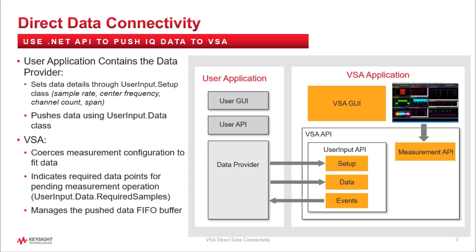There is feedback from VSA to the user application. This consists of information telling the application how many data points are needed to satisfy the VSA measurement setup, and also events when VSA has finished processing a block of data and is ready for another block. This handshaking allows a user application to stream either block data or stream data into VSA on a continuous basis.